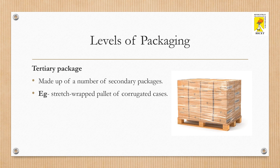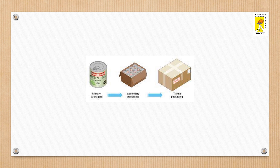A tertiary package is made up of a number of secondary packages. An example would be a stretch-wrapped pallet of corrugated cases. This type of packaging is done for easy conveyance or transit. This image represents the first three levels of packaging: the primary package, the secondary and the tertiary package.